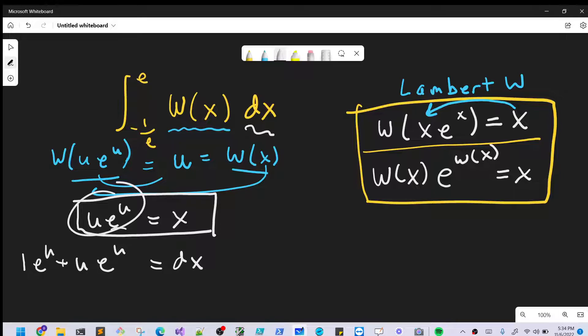And so our dx is going to be, let's write our dx. I'm just going to factor out the e to the u for now. We're going to have e to the u times u plus 1.